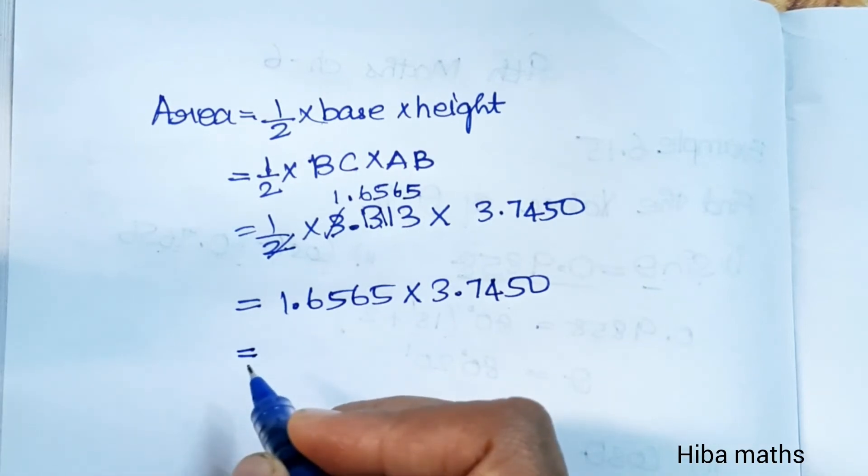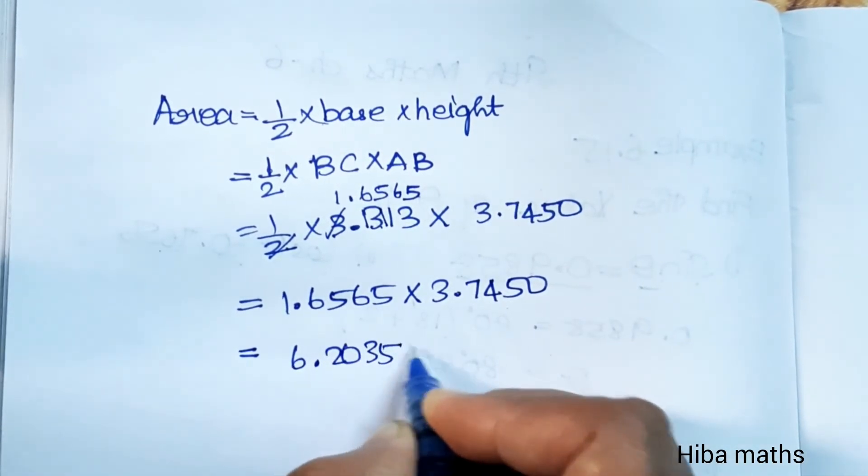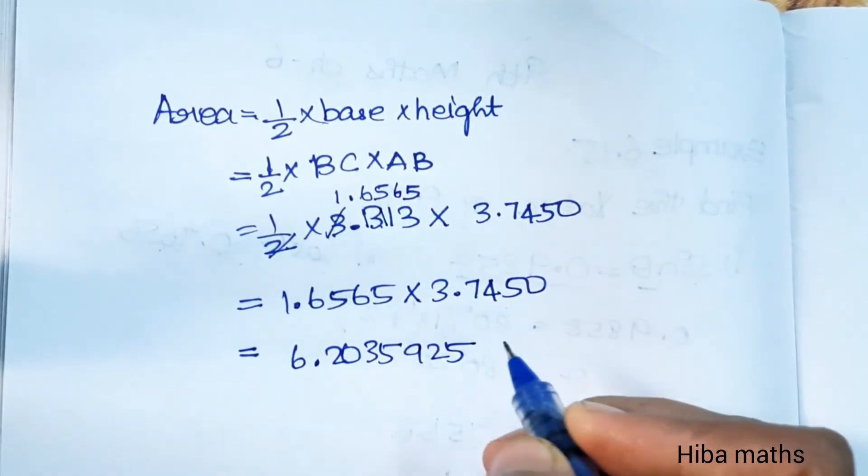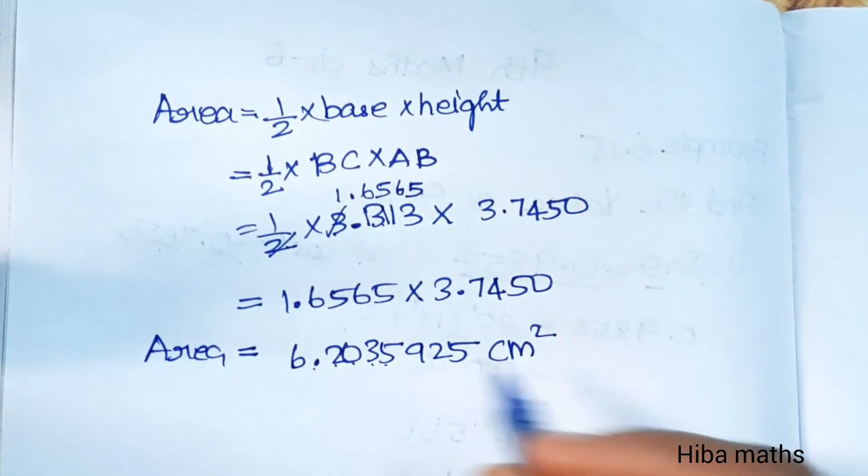We need to multiply the answer. 6.2035925 cm². This is the area value. You can do the multiplication to check the answer.